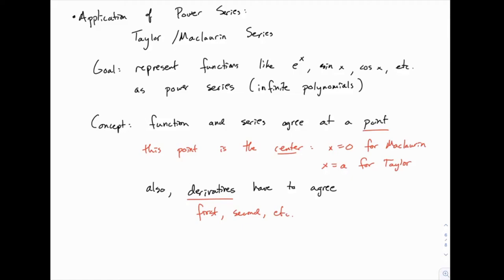Now we finally come to the big application of power series, which is what we call Taylor or Maclaurin series, named for two mathematicians. The goal of a Taylor or Maclaurin series is to take a function like e to the x, sine of x, cosine of x — one of these transcendental functions — and represent it as a power series, which you can think of as basically an infinite polynomial.